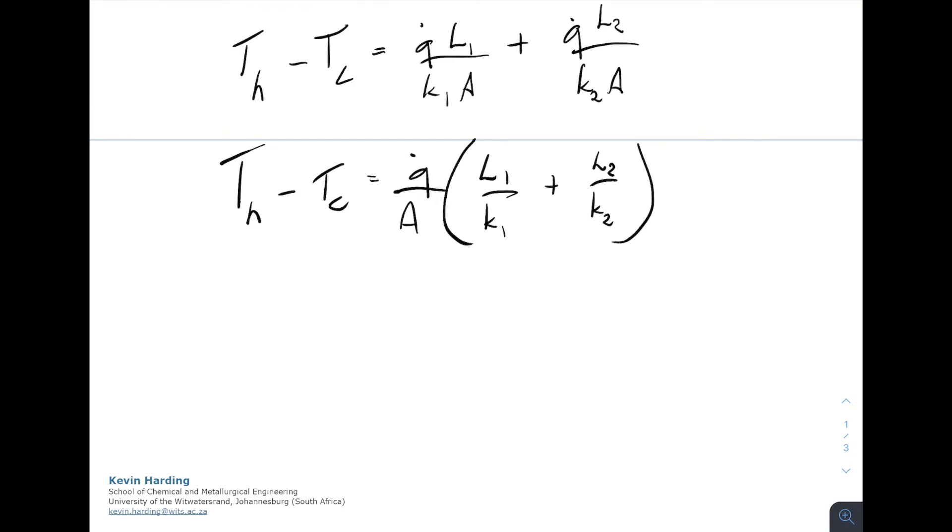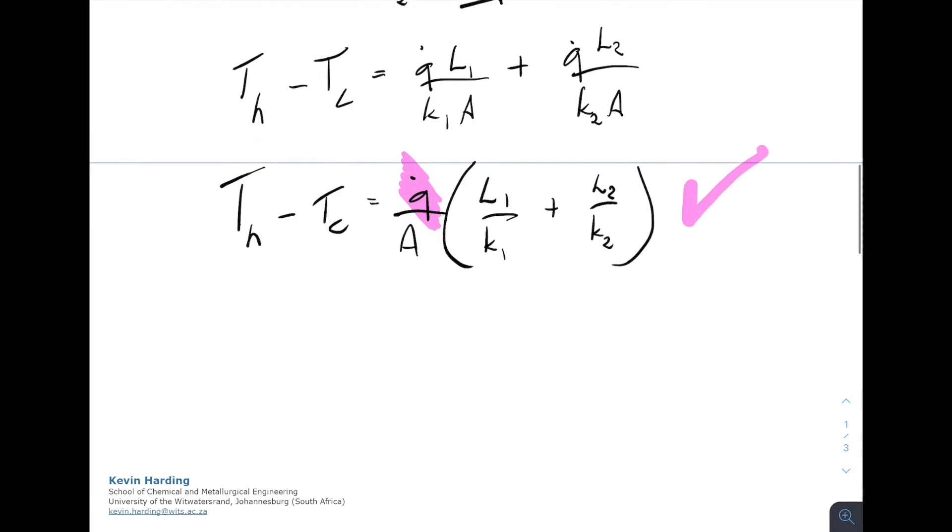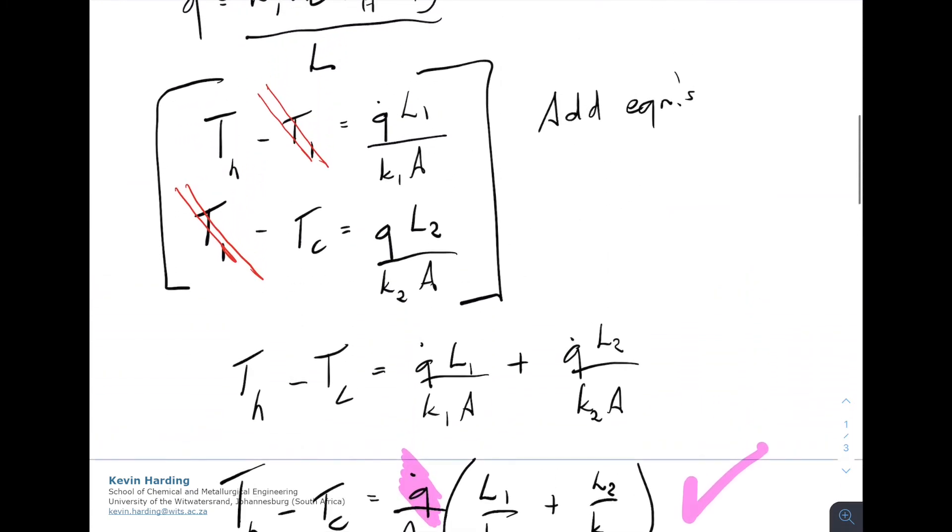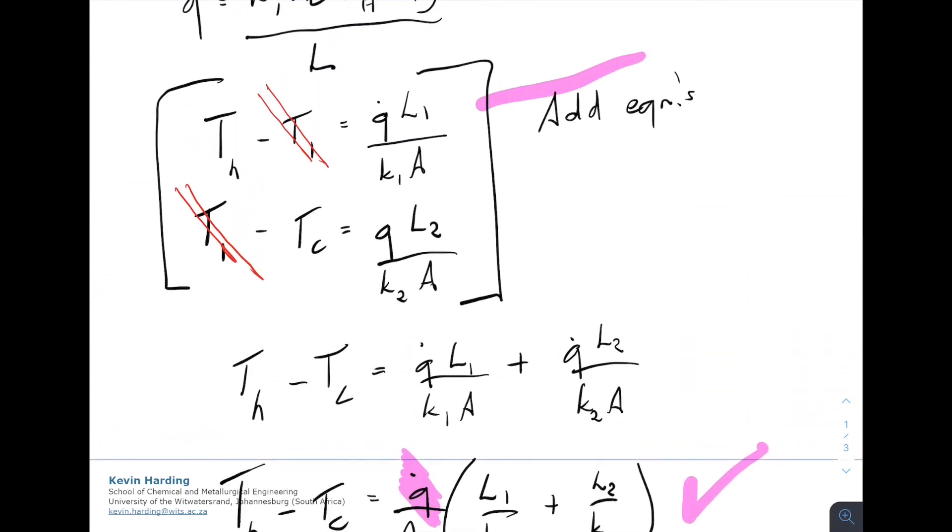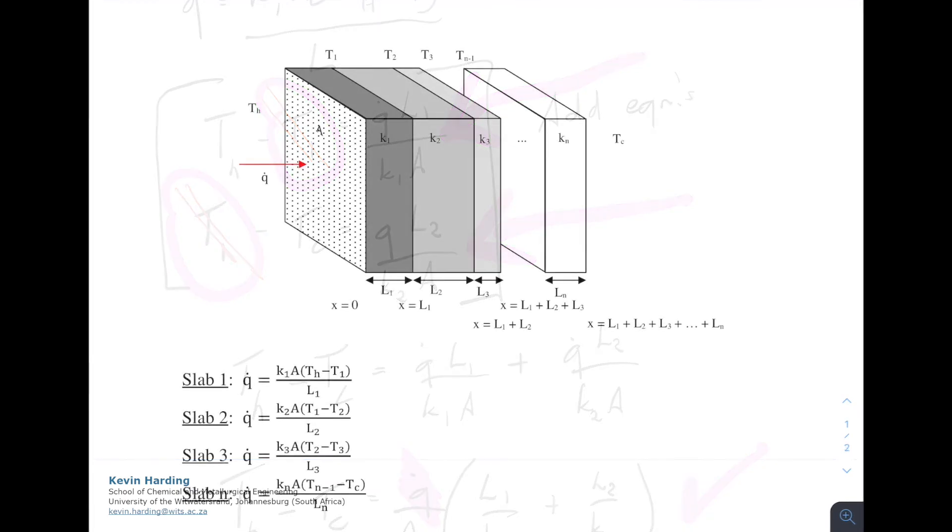We now have a single equation where the unknown is most likely Q, so we can solve for Q. If you want to find a temperature, simply go back to either the first or second equation for T hot minus T1 or T1 minus T cold, and use either one to solve for temperature one.